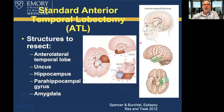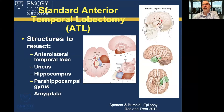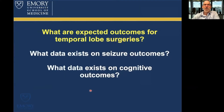The standard temporal lobectomy involves removing several structures. The anterior temporal lobe provides access to the medial temporal structures, including the uncus, hippocampus, parahippocampal gyrus, and amygdala. It is typically done through a small question-mark incision, preserving as much of the temporal muscle as possible.